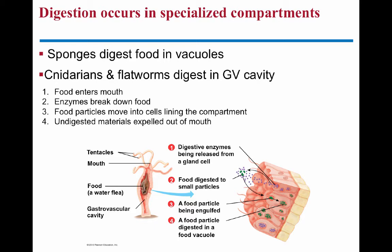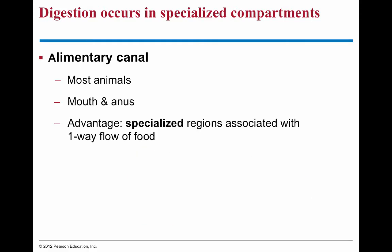Cnidarians and flatworms have a gastrovascular cavity. Food enters the opening, gets digested inside the cavity where enzymes are released and food is broken into smaller particles taken into the cells. Particles that can't be broken down are released back out that same opening.